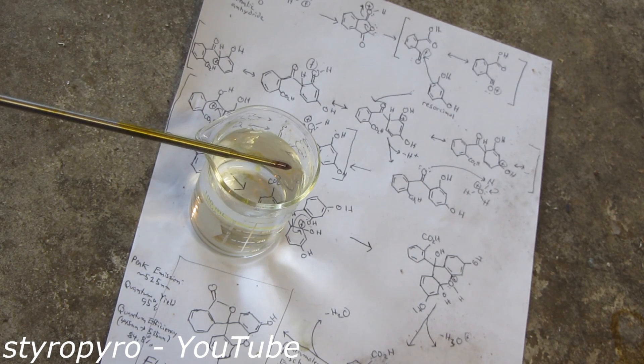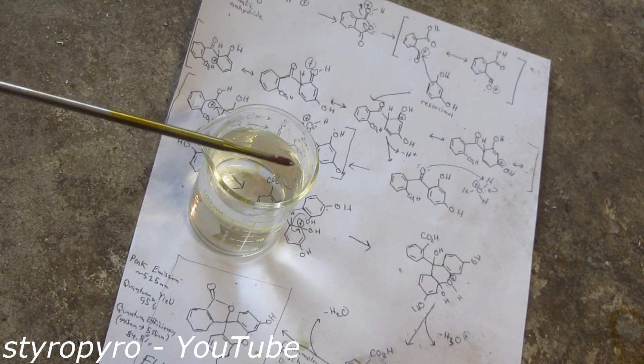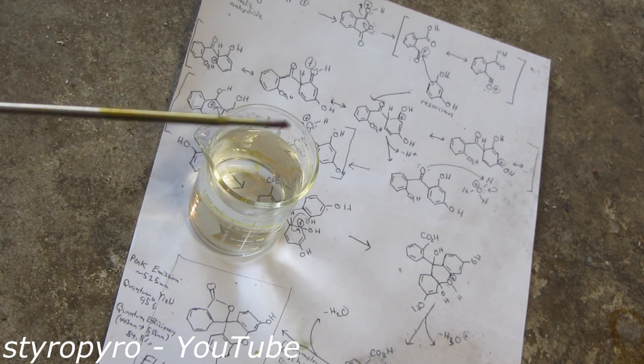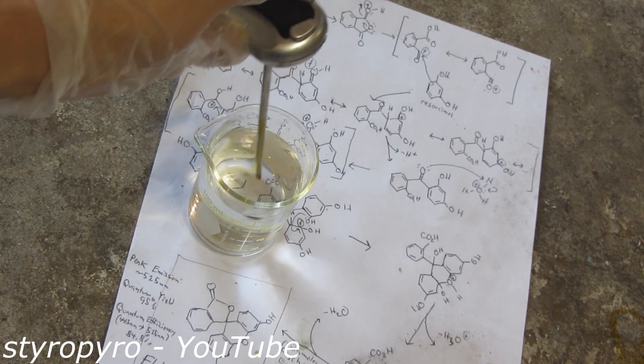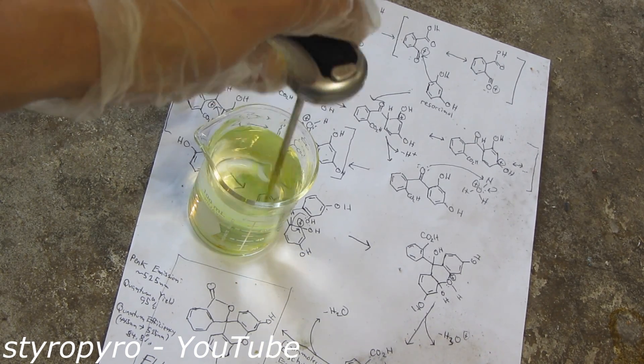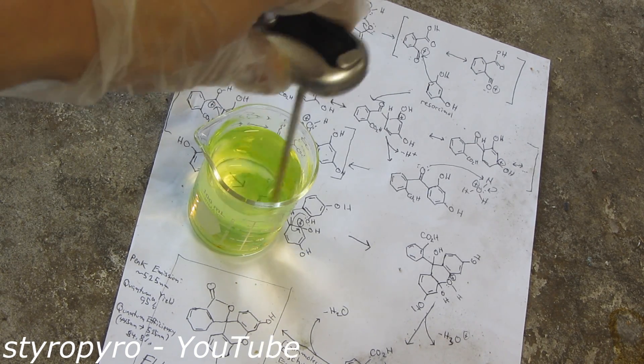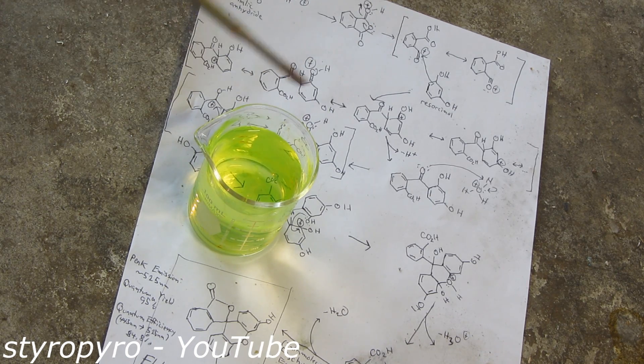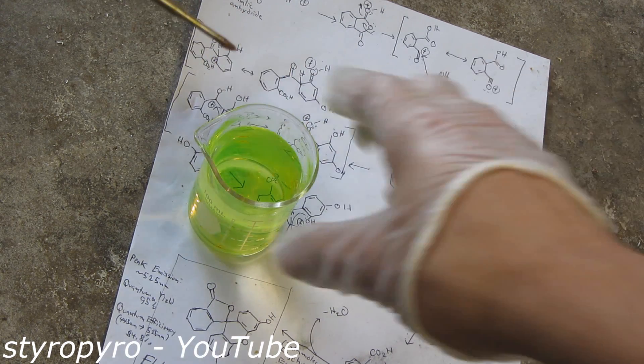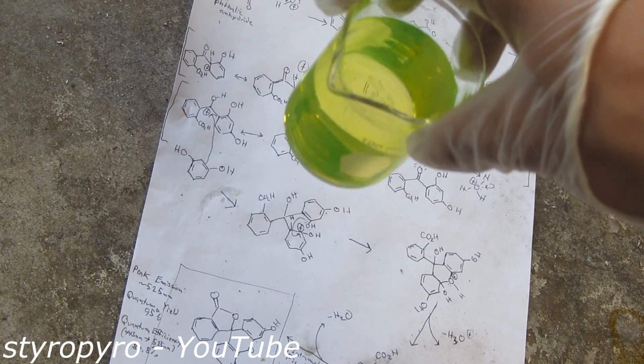To show you how potent this stuff is, I'm going to dip the end of my thermometer in this water. There's just a little bit of fluorescein on the end here. It does not take much to make the water glow really brightly. Yeah, you can see it glowing there. That's crazy. And most of it's still back on the thermometer there. Wow.